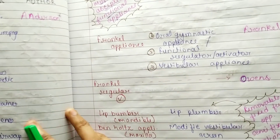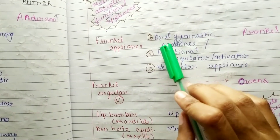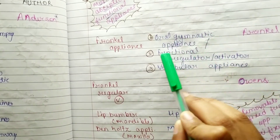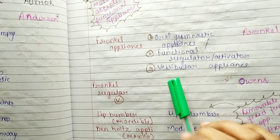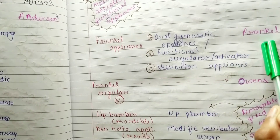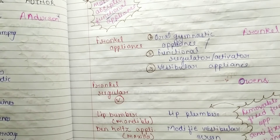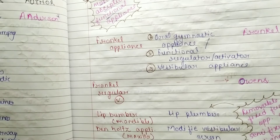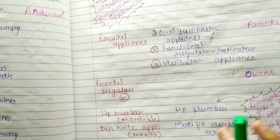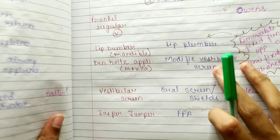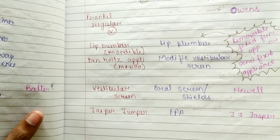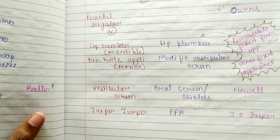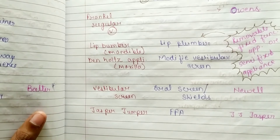Frankel Appliances — other synonyms are Oral Gymnastic Appliance, Functional Regulator, and Vestibular Appliance. Frankel discovered all Frankel Regulators, except the fifth one, FR5, which was discovered by Ovens.